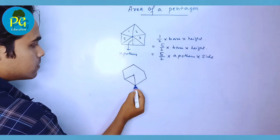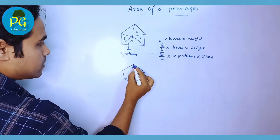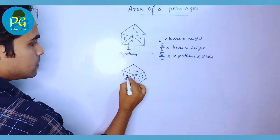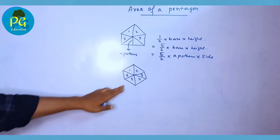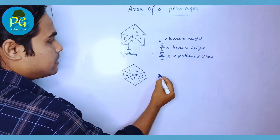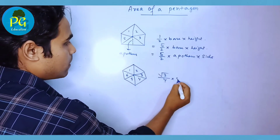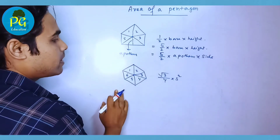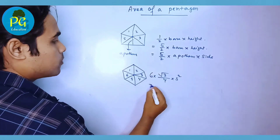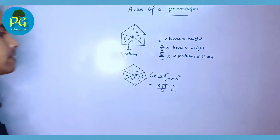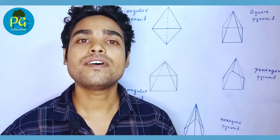For a hexagon, if we join the center with the six corners, we get six triangles. Each triangle is an equilateral triangle, so the area of a single triangle is (√3/4) × side². Multiplying by six triangles gives (3√3/2) × side². That is the area of a hexagon.